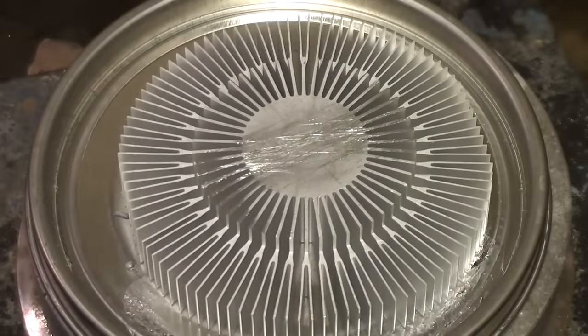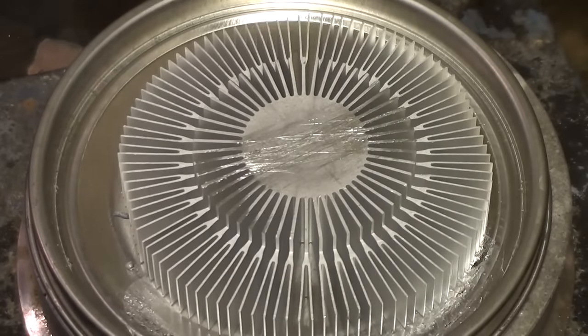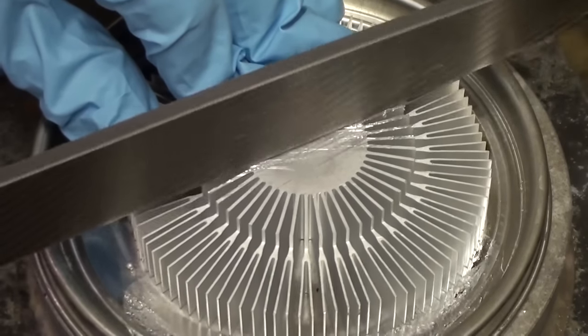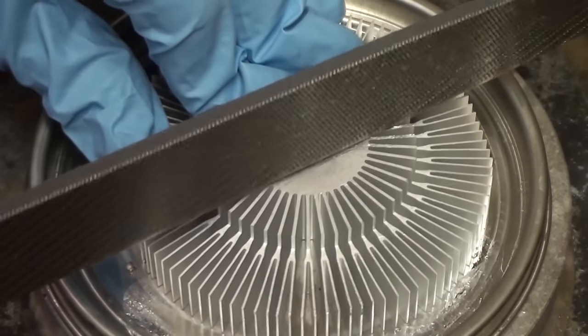So here is the heatsink without the fan, it's quite solid and strong. I scratched it up a bit with a file beforehand to get rid of the oxide layer. This is to let the gallium access the aluminum.